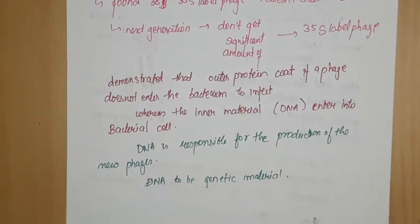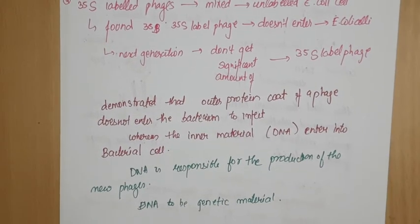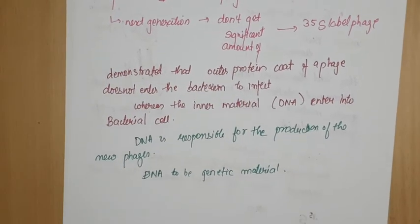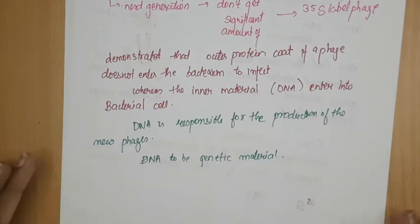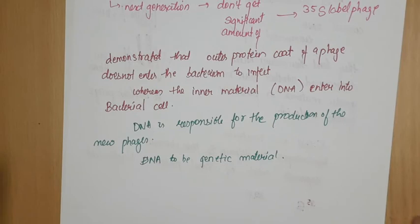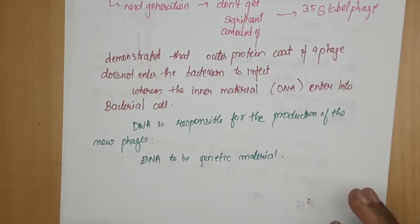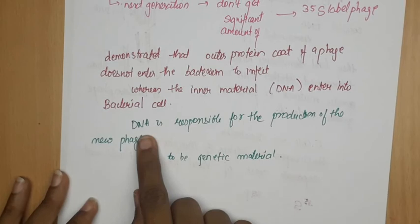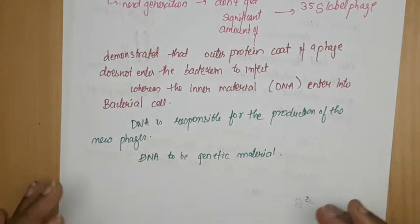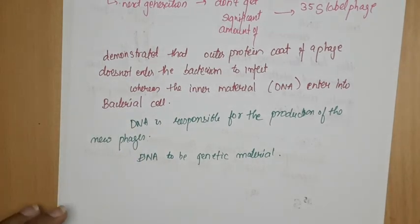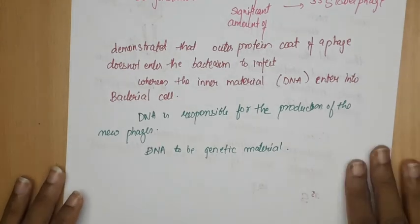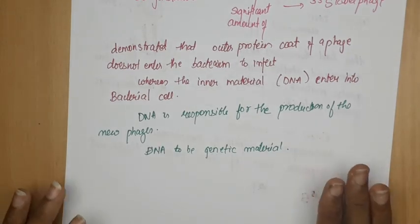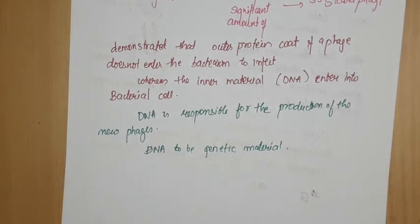They demonstrated that the outer protein coat does not enter into the bacteria, and the inner material, DNA, enters into the infection. This DNA is responsible for the reproduction of phage, and they said DNA to be genetic material. This is the experiment of Hershey and Chase. Thank you for watching my video.